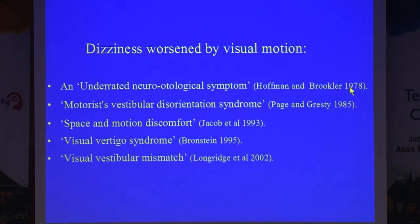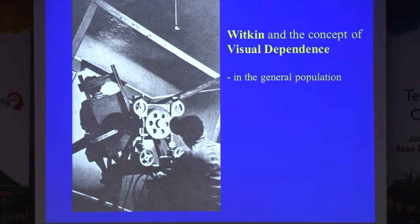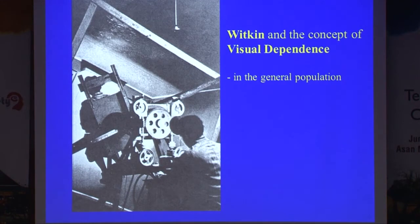This issue of dizziness worsened by visual motion has a long history — I'm sure Jeff Staab has found references in Neanderthal people describing visual vertigo. Now we call it visually induced dizziness and we are probably talking about similar conditions. Where does it come from? There is an old concept by American psychologist Witkin from the 1940s and 50s.